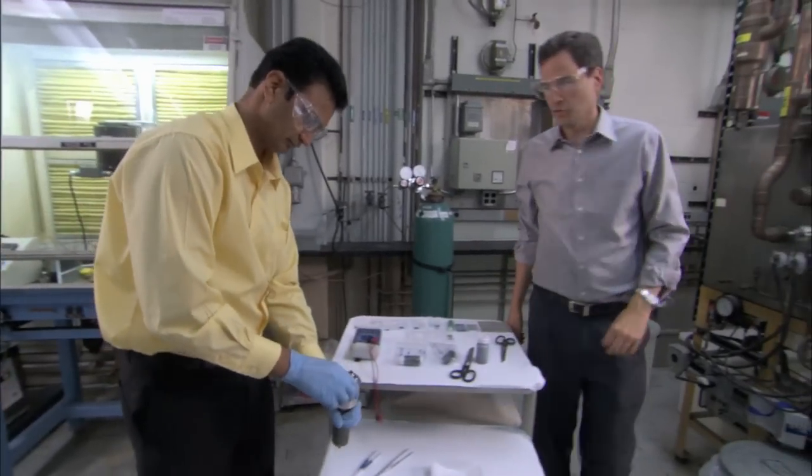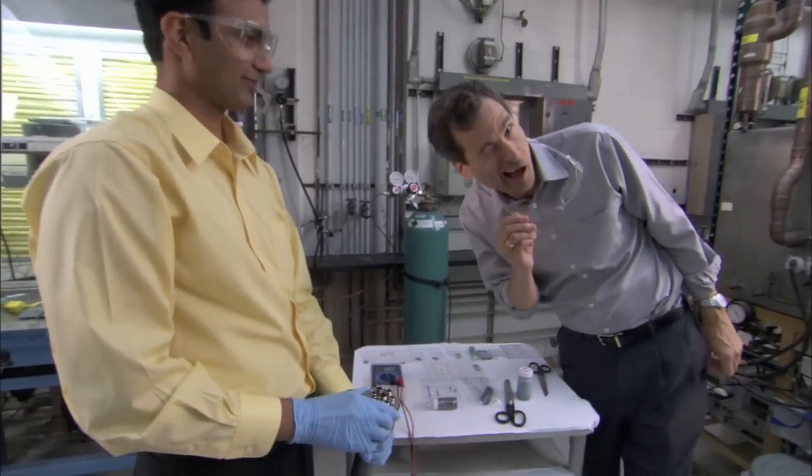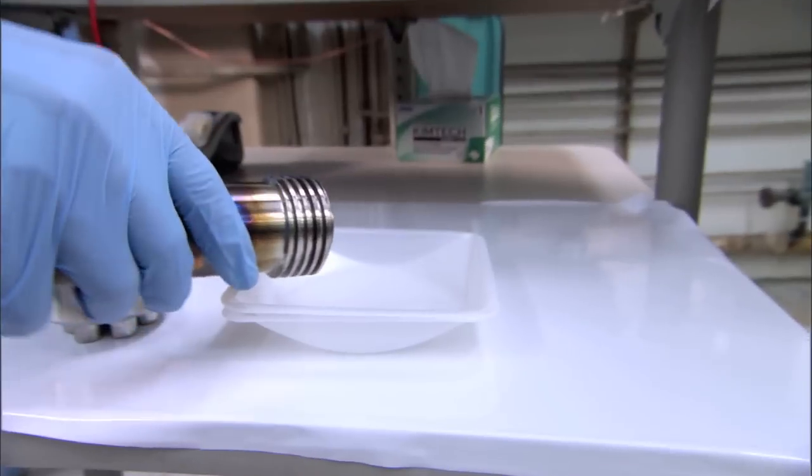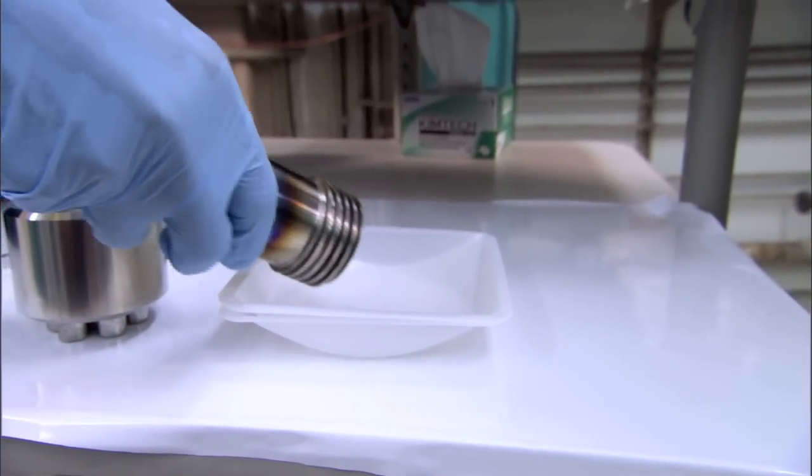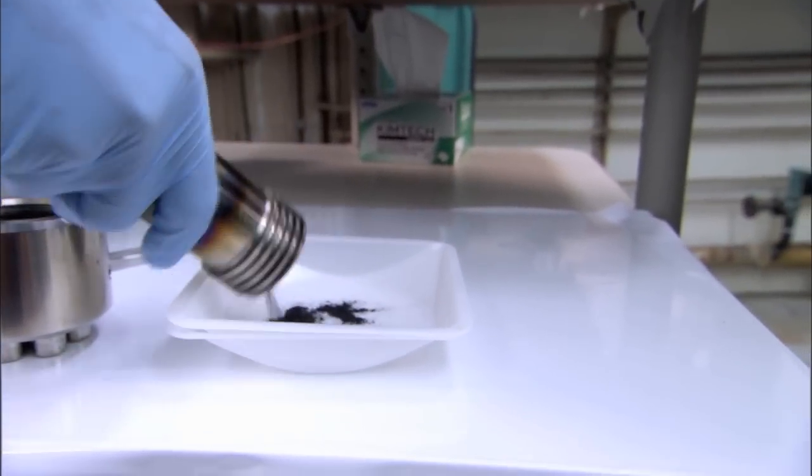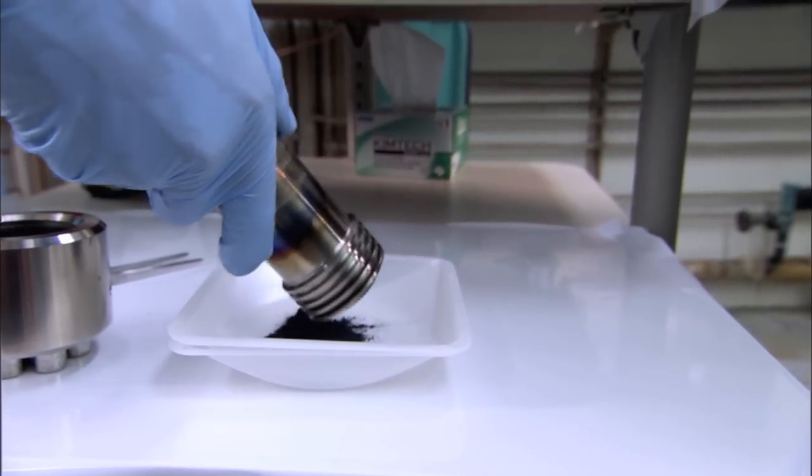Okay, so three hours have elapsed. And we're going to take a look at what you've cooked up. It looks a lot like black powder. But Vilas has another name for it.